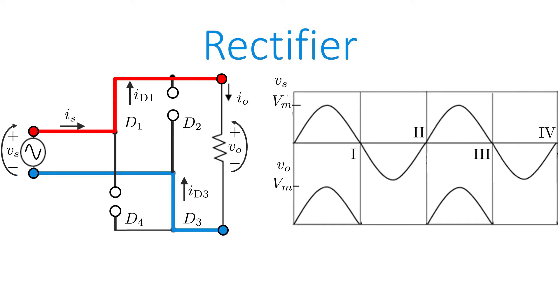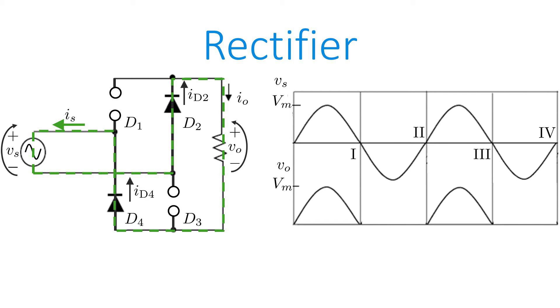This occurs in time periods 1 and 3, as shown in the figure. On the other hand, when the voltage signal is negative, which corresponds to time periods 2 and 4, diodes D2 and D4 will conduct, and diodes D1 and D3 will block the current.